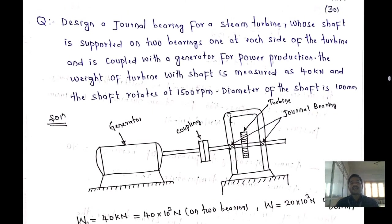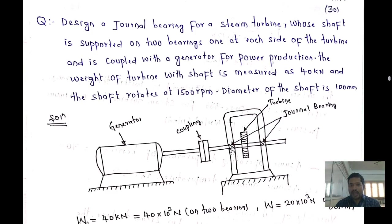Design a journal bearing for a steam turbine whose shaft is supported on two bearings — one at each side of the turbine, toward the left side as well as toward the right side — and is coupled with the generator for power production purposes.